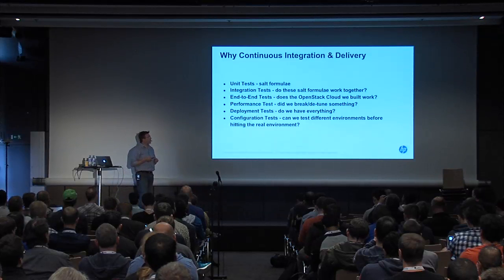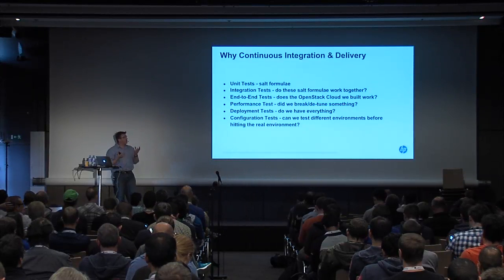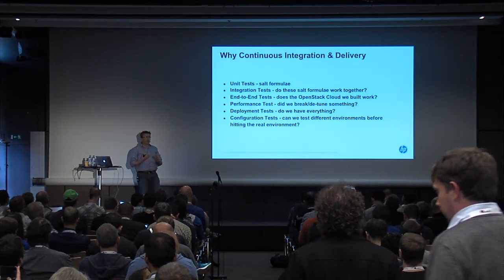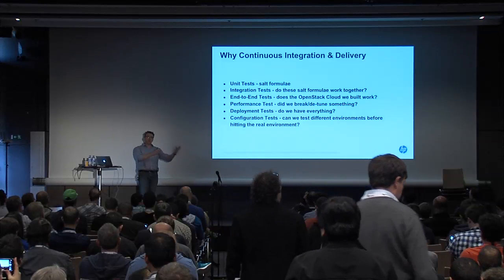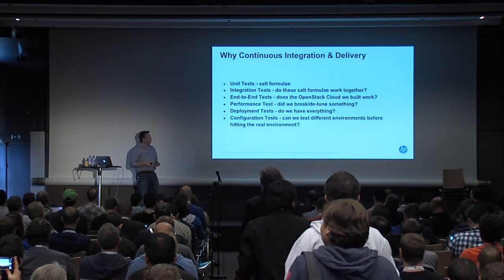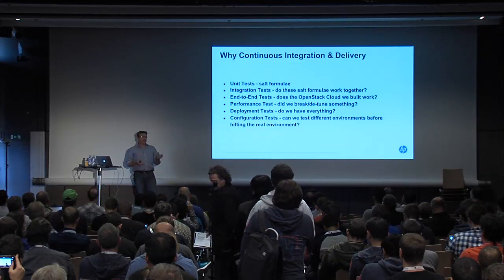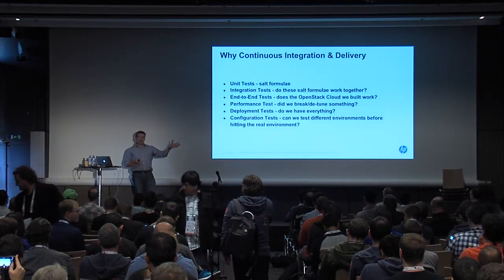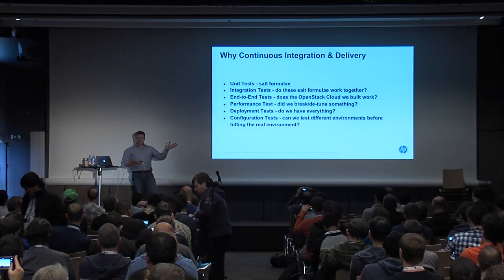Another advantage of having a proper pipeline is the ability to test everything. You can unit test at your smallest component level. You can do integration testing to make sure that your whole environment still works. You can do end-to-end testing so that the thing you've just built with all of your configuration management still works as you expect. Once you have that reliable pipeline, you can then build in performance testing. We've built something with this new set of deployment modules — does it work better, faster or slower than what we built previously? Were we expecting it to work faster or slower?